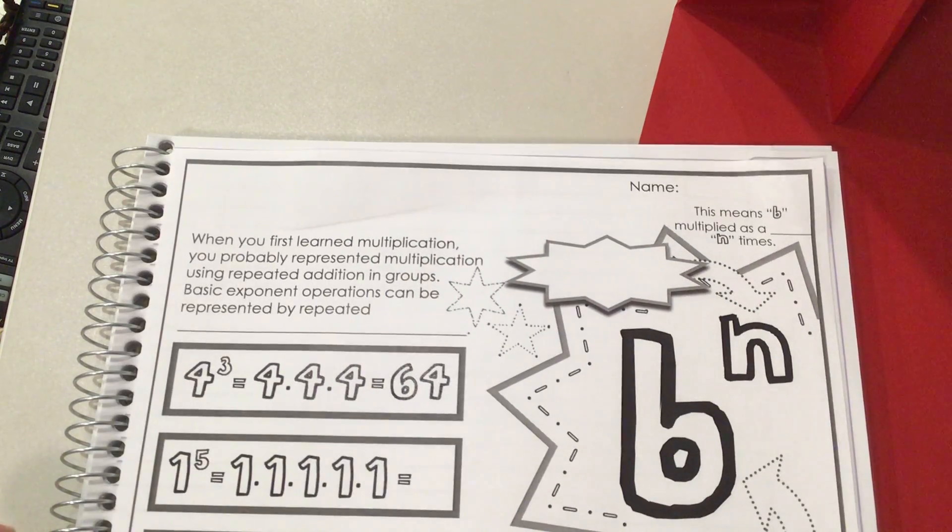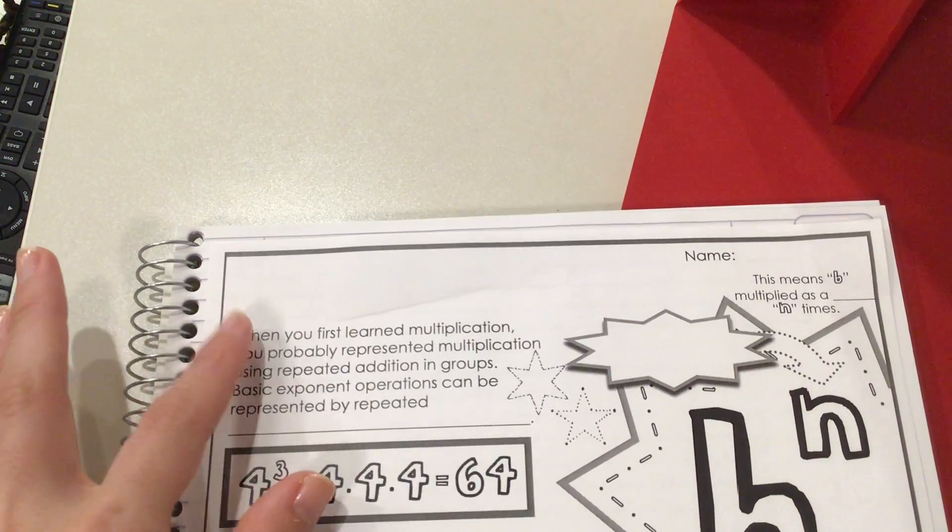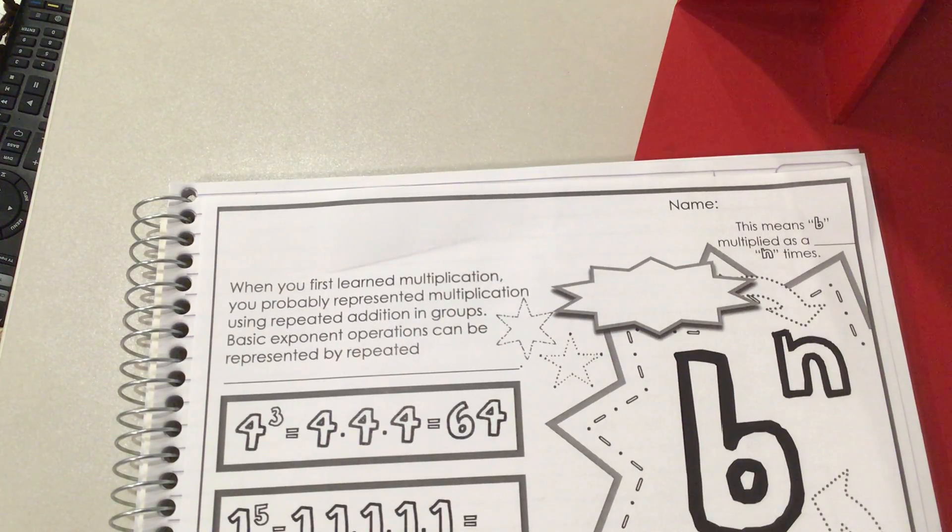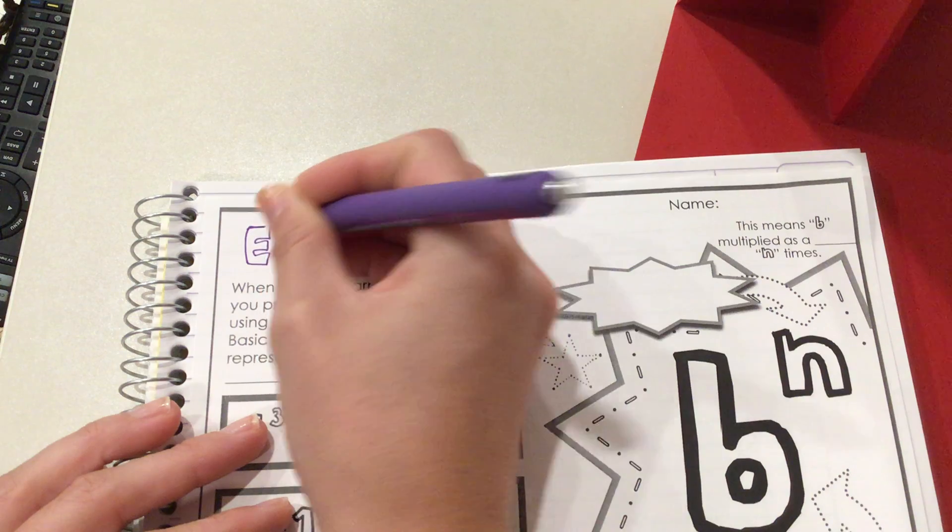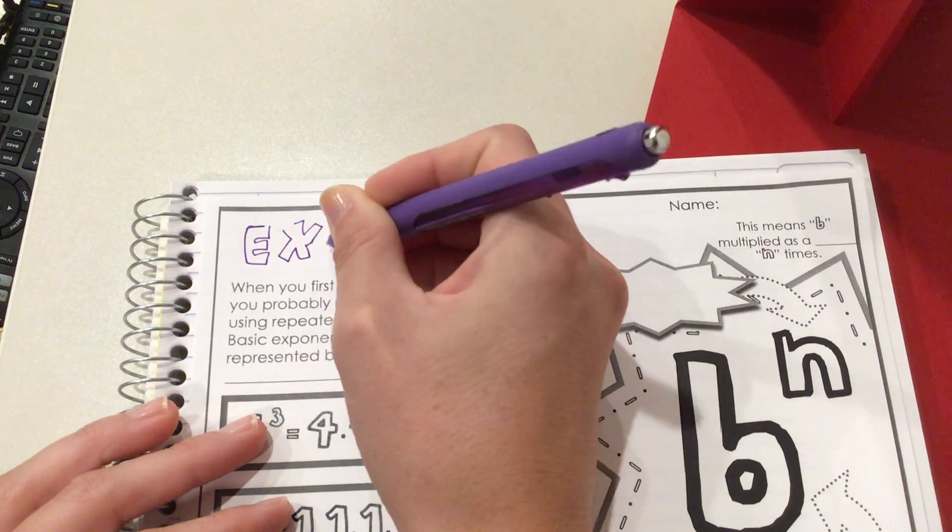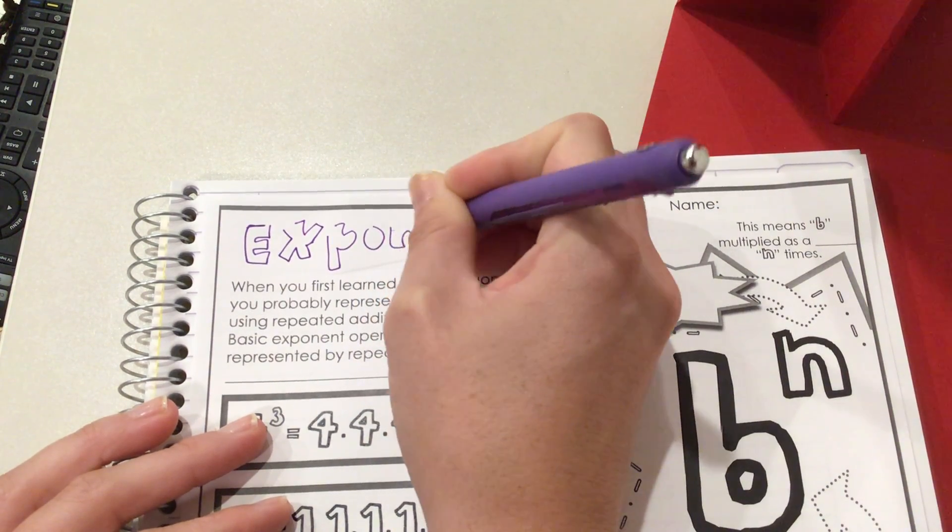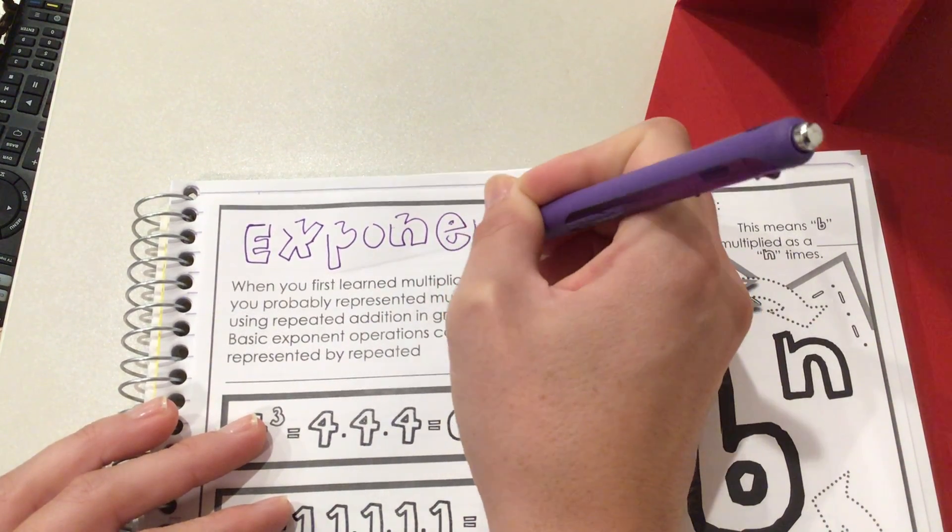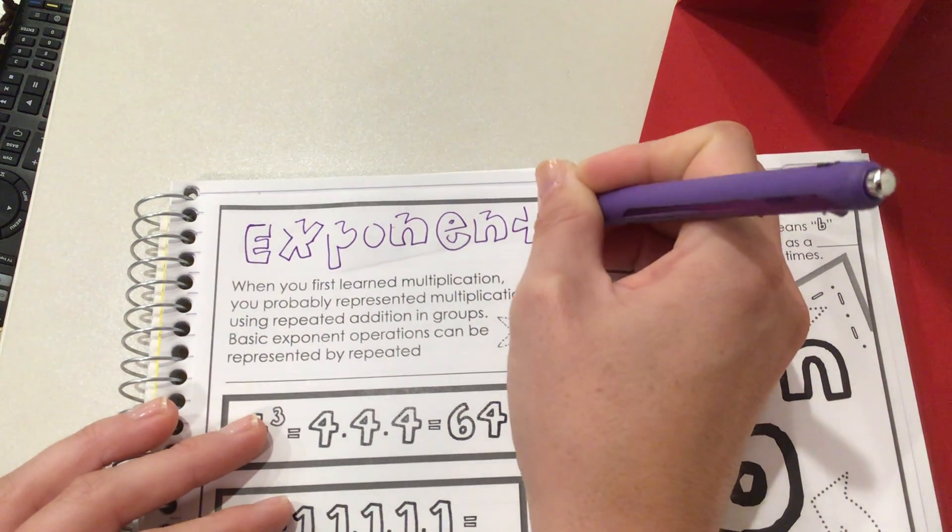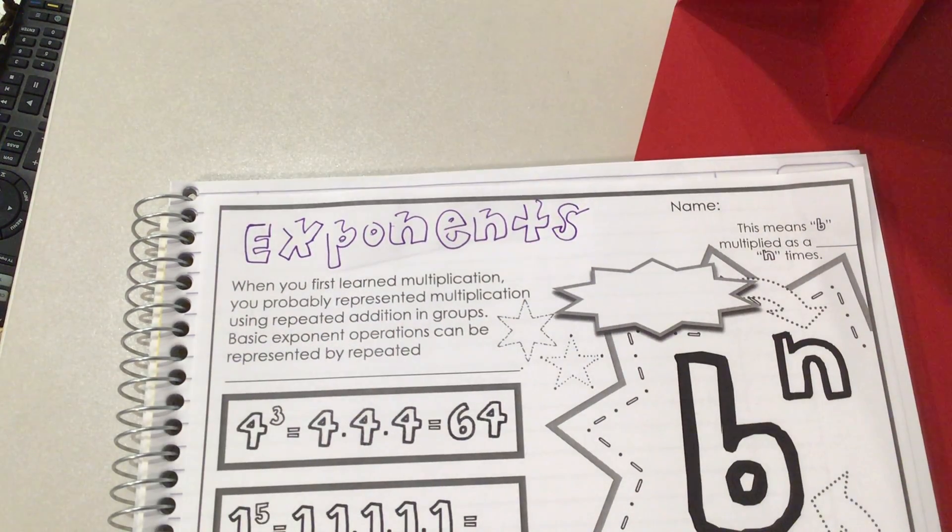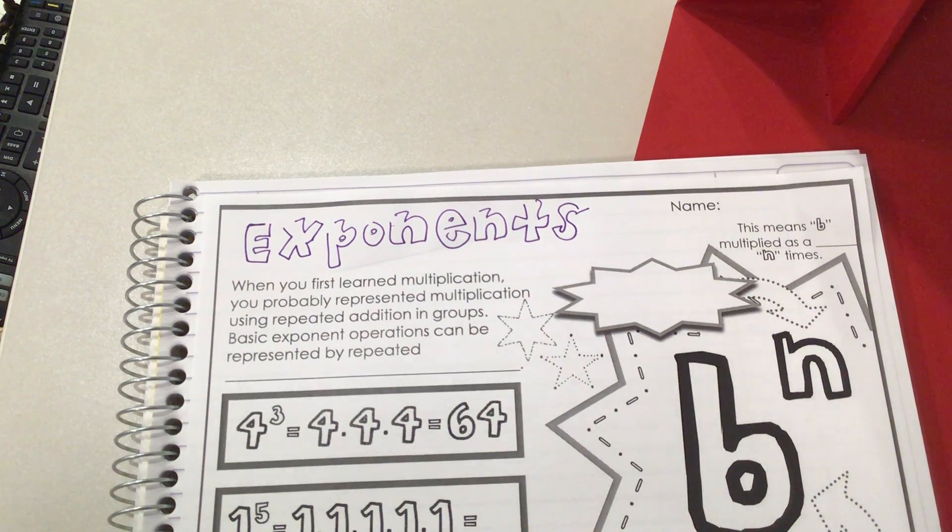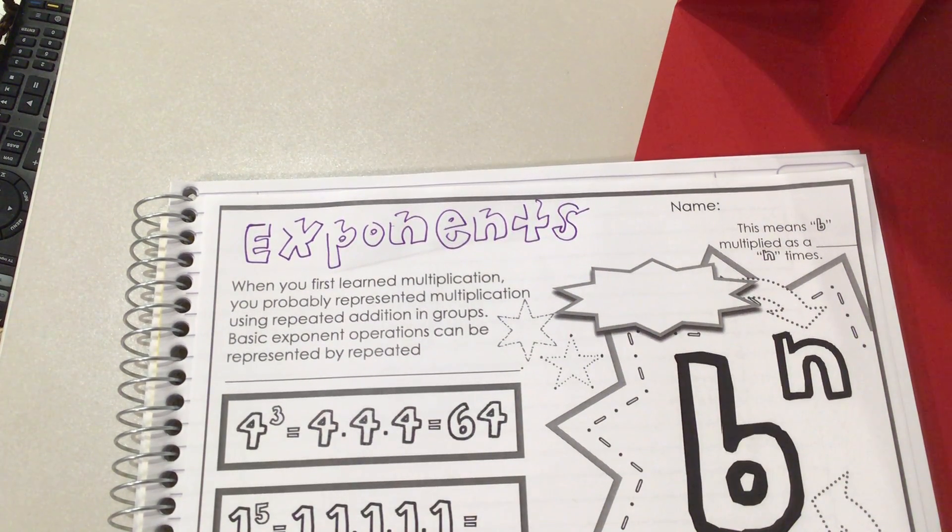Now we're going to go to the next page and glue it in. At the top, when you print yours, this might look different. When I printed my copy, this was cut off, so we're just going to add Exponents to the top as our title. If you ever need to pause the video, just pause it before you move forward. I'm going to go through it in one shot so the video isn't super long, but you can pause it, rewatch it, however it works best for you.